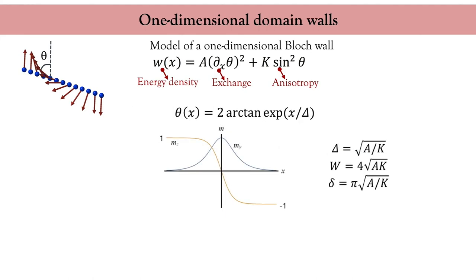Here is a picture of the magnetization profile along the wall. At plus and minus infinity, the angle theta equals 0 and π respectively, meaning the homogeneous magnetic domains are aligned along +z and −z respectively. Close to the center of the wall, the m_y component is non-zero, as given by the expression of theta.